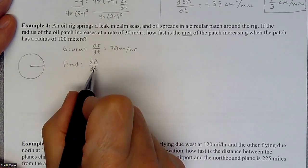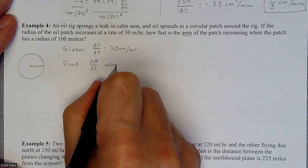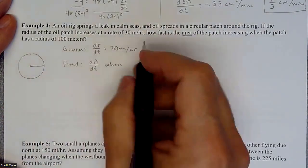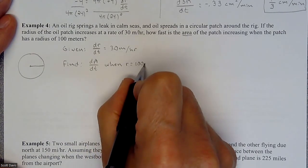How fast is the area changing with respect to time when we have a particular situation, particularly when our radius equals 100 meters.